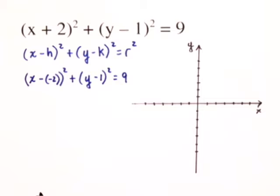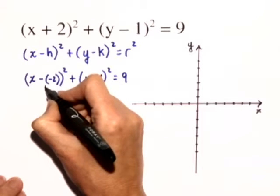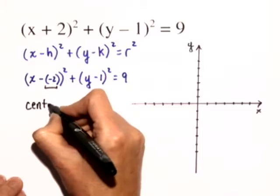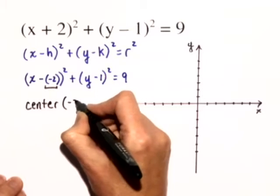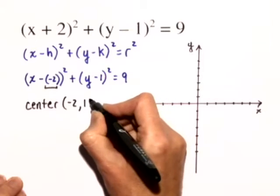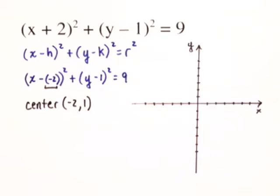So we can see that this negative 2 really represents the h or the x coordinate of the vertex. And the 1 represents the k or the y coordinate of the vertex.